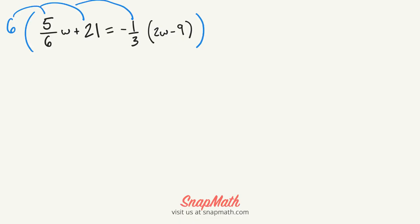When we distribute the 6 to the 5 over 6w, the 6 is canceled out, and you're left with 5w.